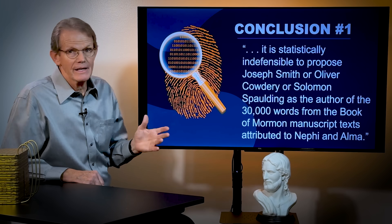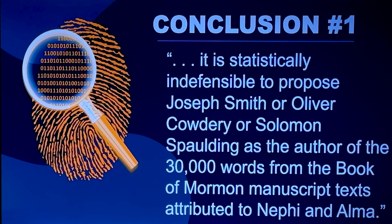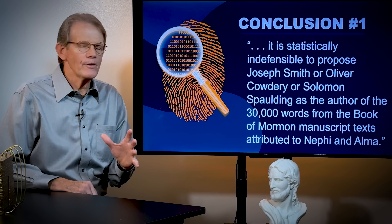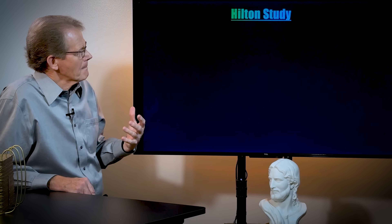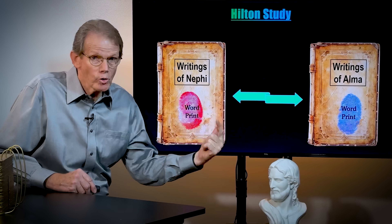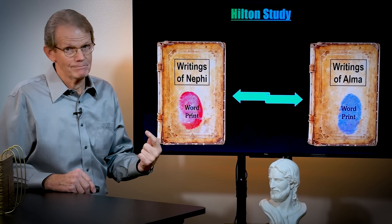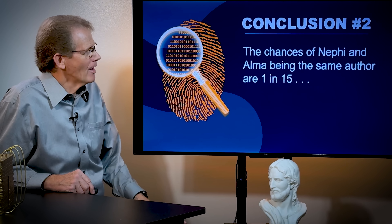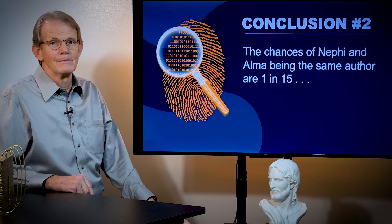What did they find? Conclusion number one was: it is statistically indefensible to propose Joseph Smith, Oliver Cowdery, or Solomon Spaulding as the author of the 30,000 words from the Book of Mormon manuscript texts attributed to Nephi and Alma. Next, they compared the word print of Nephi with the word print of Alma, because if the Book of Mormon was written by one author, those word prints would show up as the same. What did they find? The chances of Nephi and Alma being the same author are one in 15 trillion.